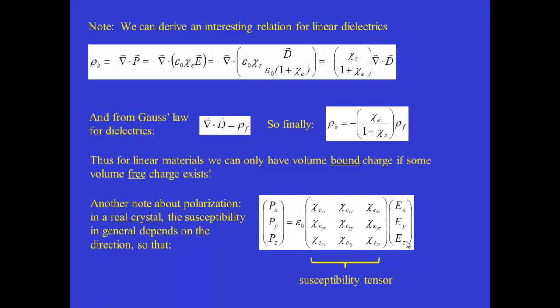So that in general, this susceptibility can't be written as a simple constant, but rather as a 3×3 matrix, which represents a tensor quantity.